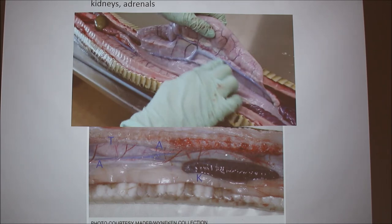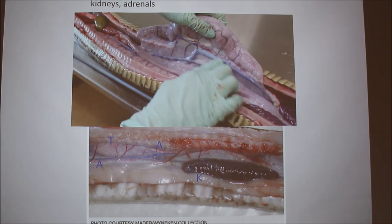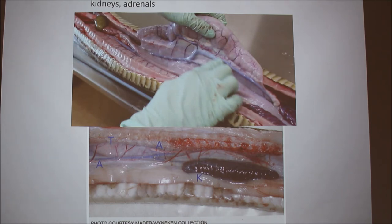In the end we actually found out — Googling it right after — that this was the kidneys and this is the testes. The kidneys are definitely almost liver-colored, and the testes are whitish. You can see it here clearly. So the testes are whitish, and they had these little structures.